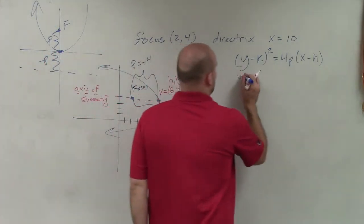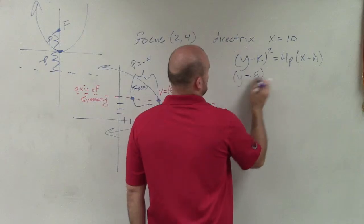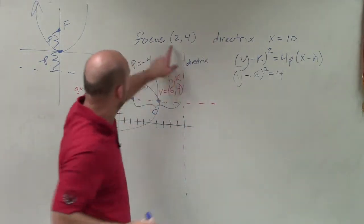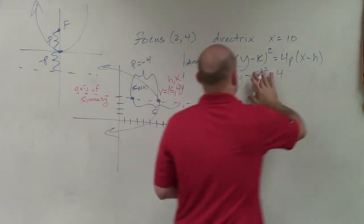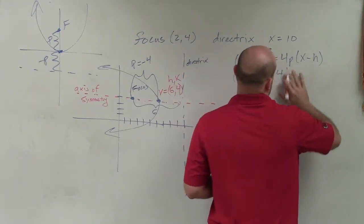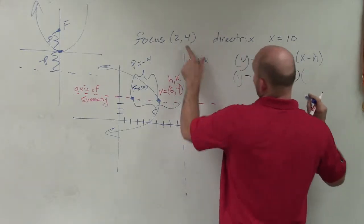So now I'm going to plug that in. So I'll say (y - 6)² = 4 times my p, which in this case is -4, I want to write that in there, times (x - 6).